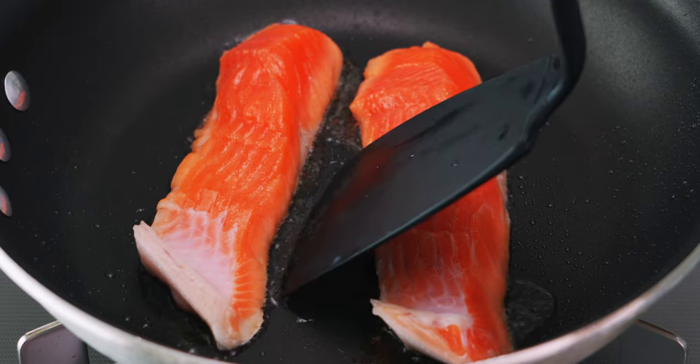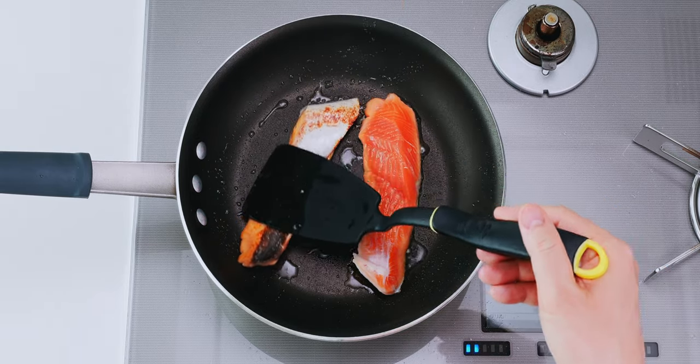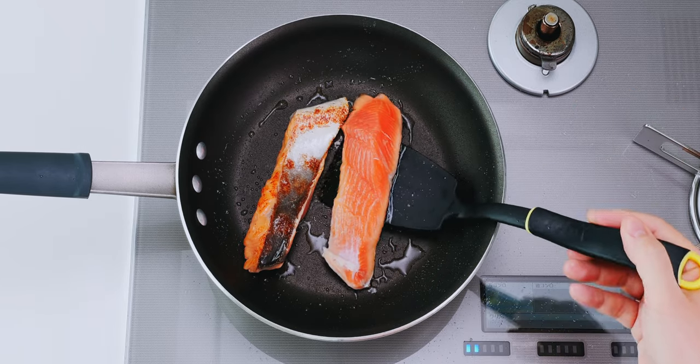Now you'll want to carefully flip the salmon over with a spatula and brown the other side until the salmon is cooked through. This should take about another two minutes.